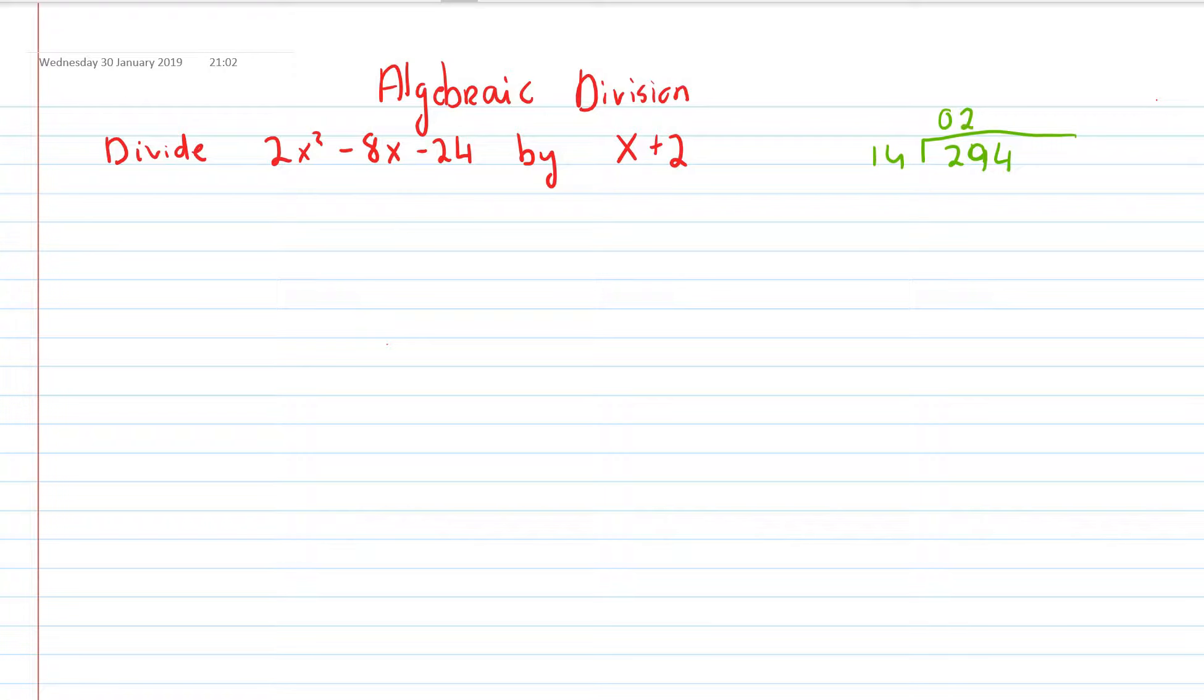It goes in twice. And then I'd multiply the 14 by 2 and I get 28. And then I'd minus them and I get 01. And then I'd bring down the 4.